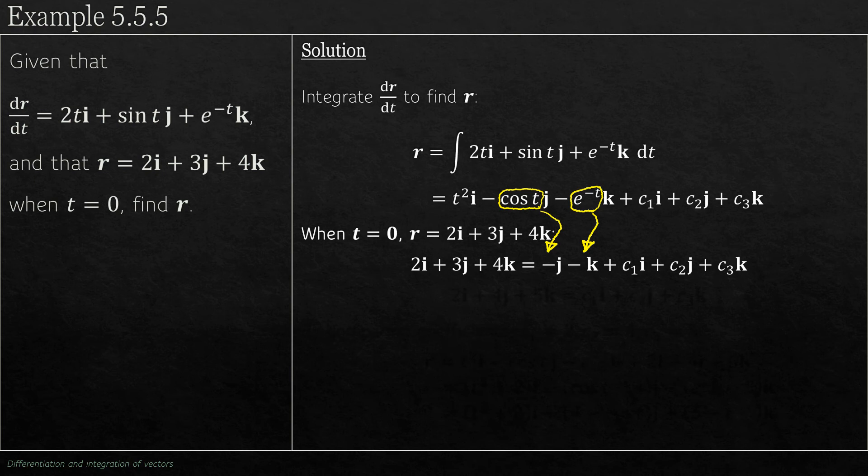Now rearranging this by collecting the j terms on the left, k terms on the right, but leaving alone the c₁i, c₂j, c₃k on the right hand side allows us to see that c₁ must be 2 by comparing the i components. Compare the j components, c₂ must be 4, and similarly c₃ must be 5.